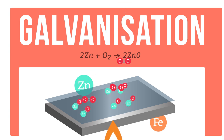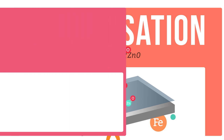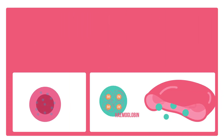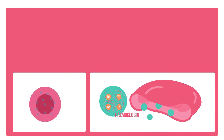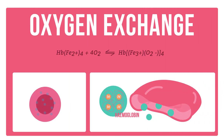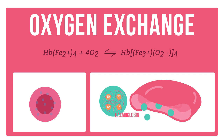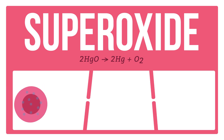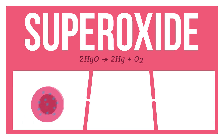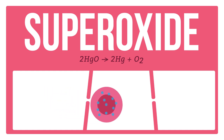Hemoglobin in blood carries oxygen around the body by oxygen exchange reactions. Four iron 2+ ions sit in the middle of a porphyrin ring. When oxygen binds, the iron 2+ reversibly oxidizes, and the negatively charged oxygen is called a superoxide.